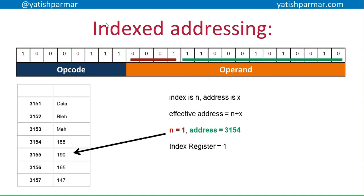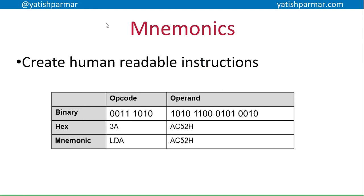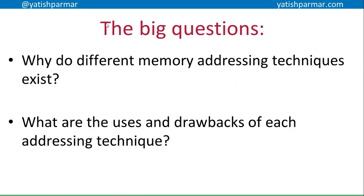So those were the four different methods. Just remember that when talking about low-level languages and assembly, we're not talking about binary — we're talking about the use of mnemonics to create human readable instructions. For example, that add instruction might actually just be 'add num1', because you can declare num1 in your program and the assembler will take care of all the memory locations and tracking where everything is. Hopefully you now understand why different memory addressing techniques exist, can describe the features of the four techniques discussed, and know the drawbacks, where they could be applied, and what the limitations of each might be. Thank you very much, and I'll see you in another video soon.